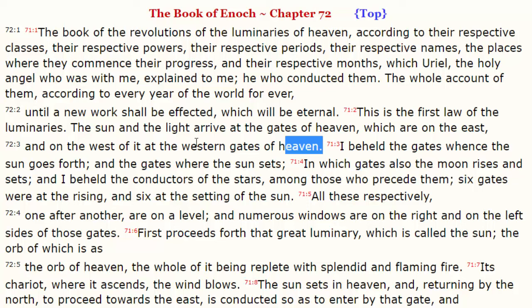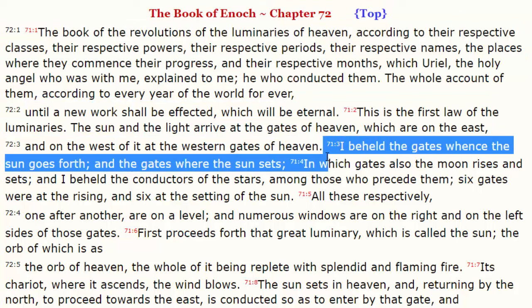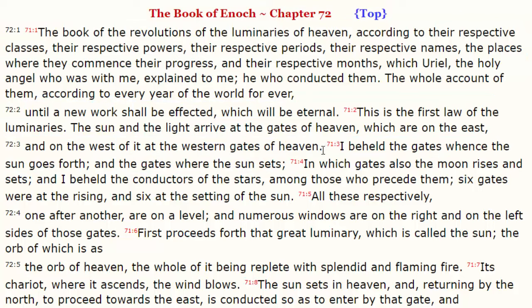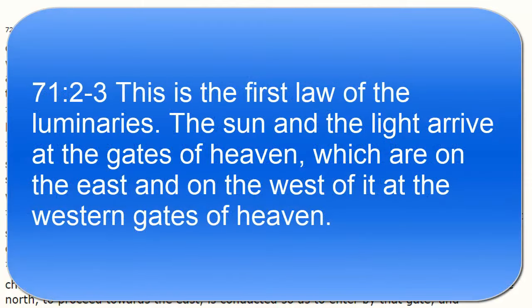Let's look at the Sun's responsibility. Like we learned in the book of Genesis, its job is to separate the days from the night. We see here in chapter 72 verse 2 of the book of First Enoch, it says: 'This is the law of the luminaries. The Sun and the light arrive at the gates of heaven, which are on the east and on the west of it, at the western gates.'